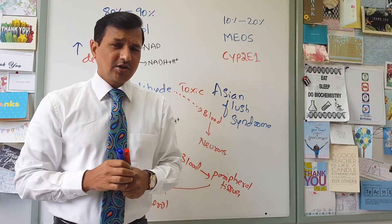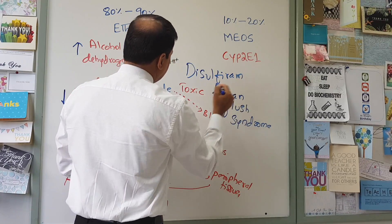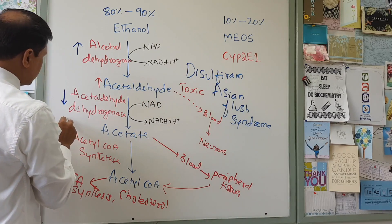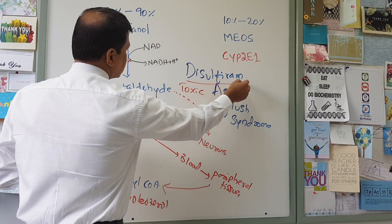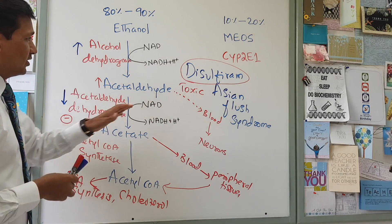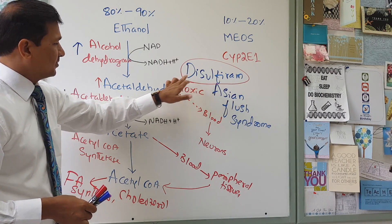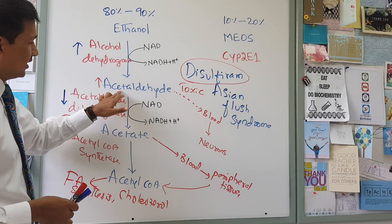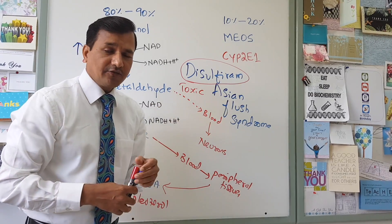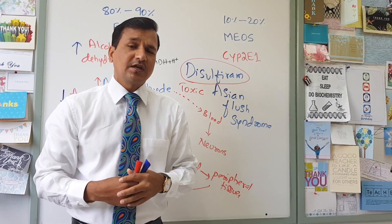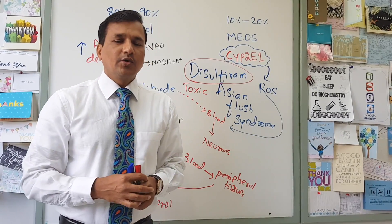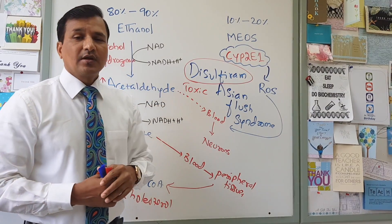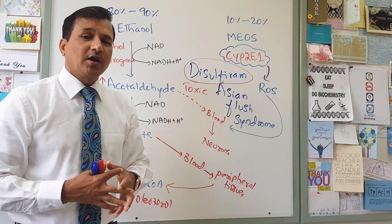There is also a drug called disulfiram. Disulfiram inhibits acetaldehyde dehydrogenase enzyme. Whenever an alcoholic takes disulfiram, it inhibits acetaldehyde dehydrogenase, thereby increasing acetaldehyde levels. That acetaldehyde has toxic effects giving rise to flushing, nausea, and vomiting, leading to the development of distaste for alcohol. That is how disulfiram helps alcoholic patients.